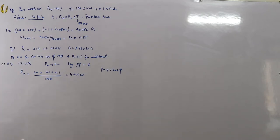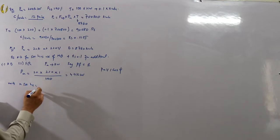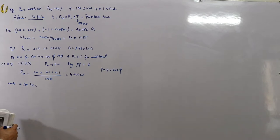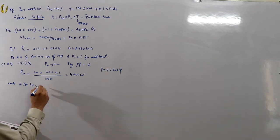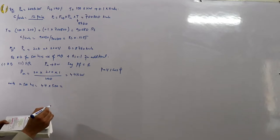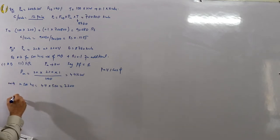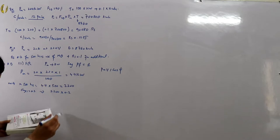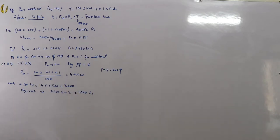Units consumed in 500 hours = 4.4 × 500 = 2200 units. These 2200 units are charged at 0.2 rupees, giving 2200 × 0.2 = 440 rupees for the first 500 hours.